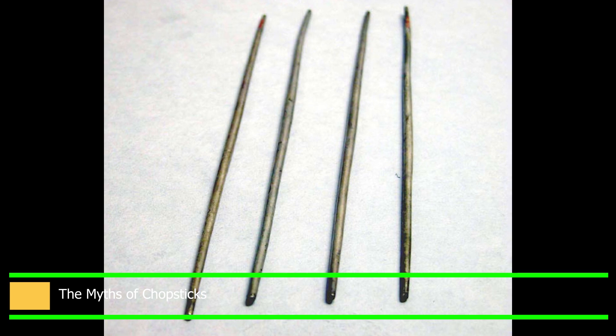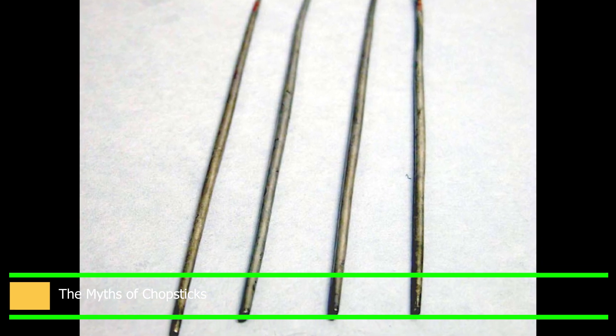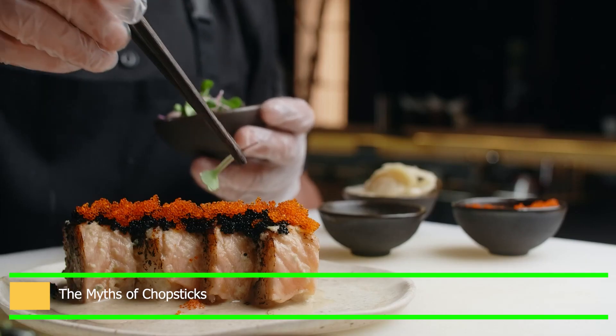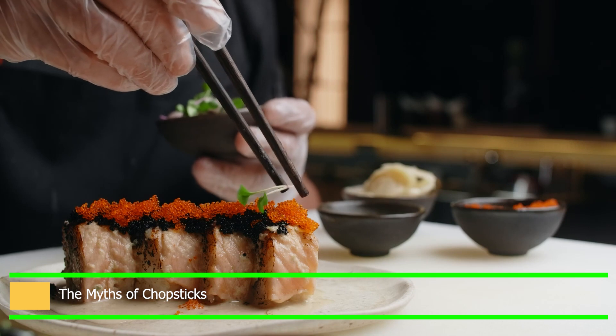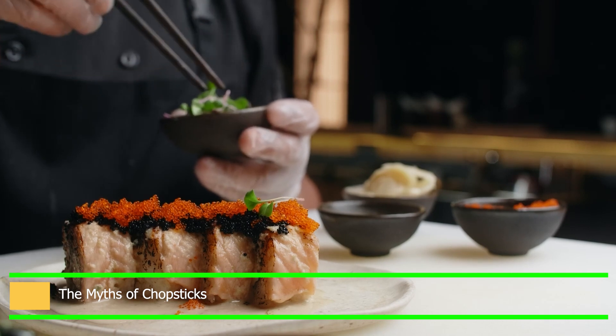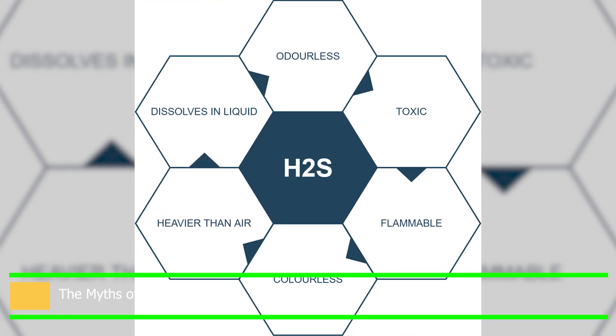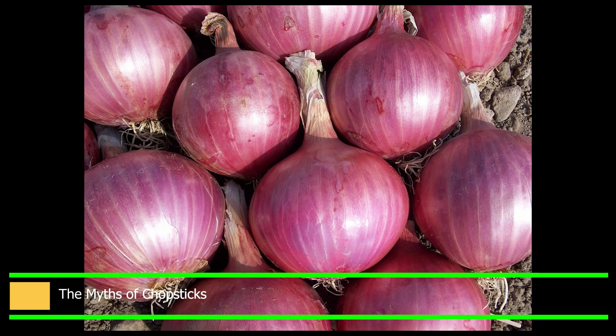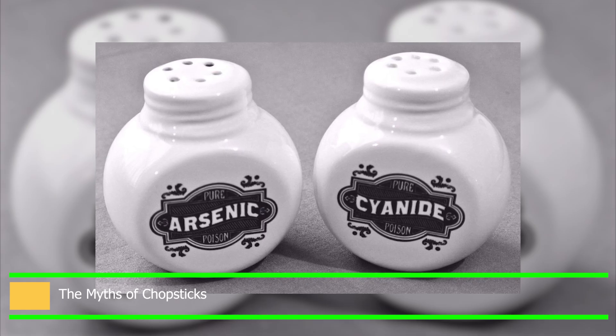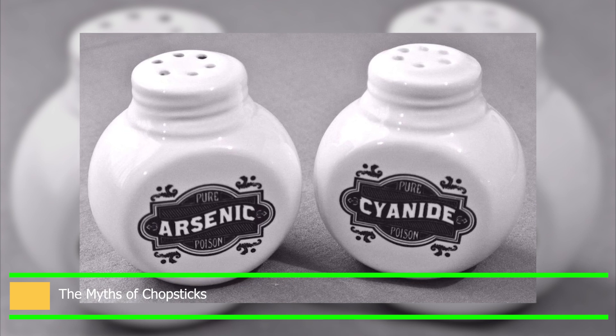Silver chopsticks were employed in the Chinese dynastic period to identify poison. Chopsticks were supposed to turn black if your food had been tainted. This approach wasn't always effective, though. Silver can react with hydrogen sulfide, which is present in garlic, onions, and rotten eggs, but it won't change color if it comes into contact with cyanide or arsenic.